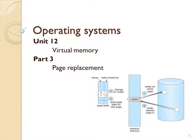That concludes Part 3. We covered global page replacement versus local page replacement, the concept of a page fault — meaning the page is not in a frame or is no longer valid — and a bit about swapping. In the next video we will be working through some page replacement algorithms.